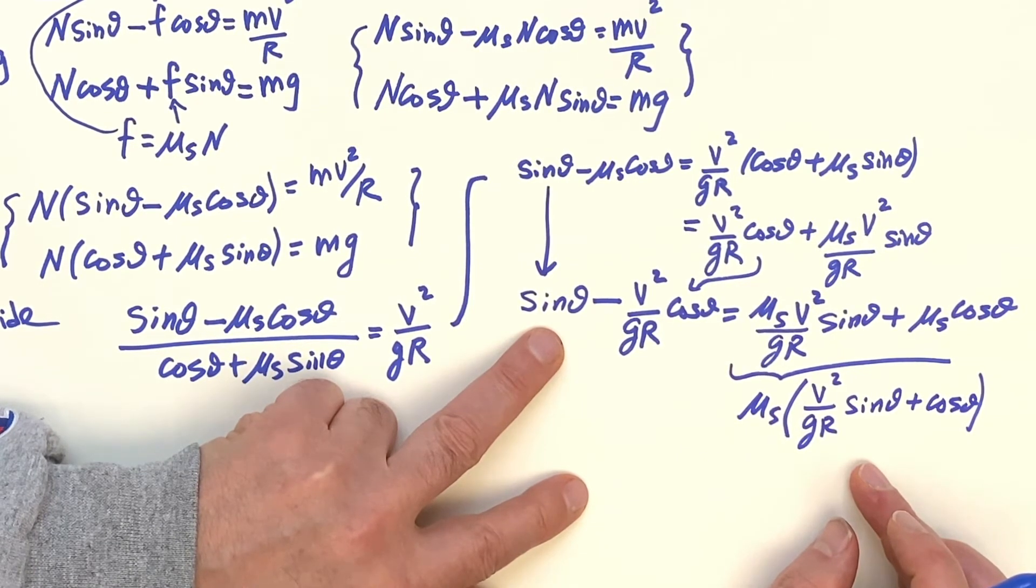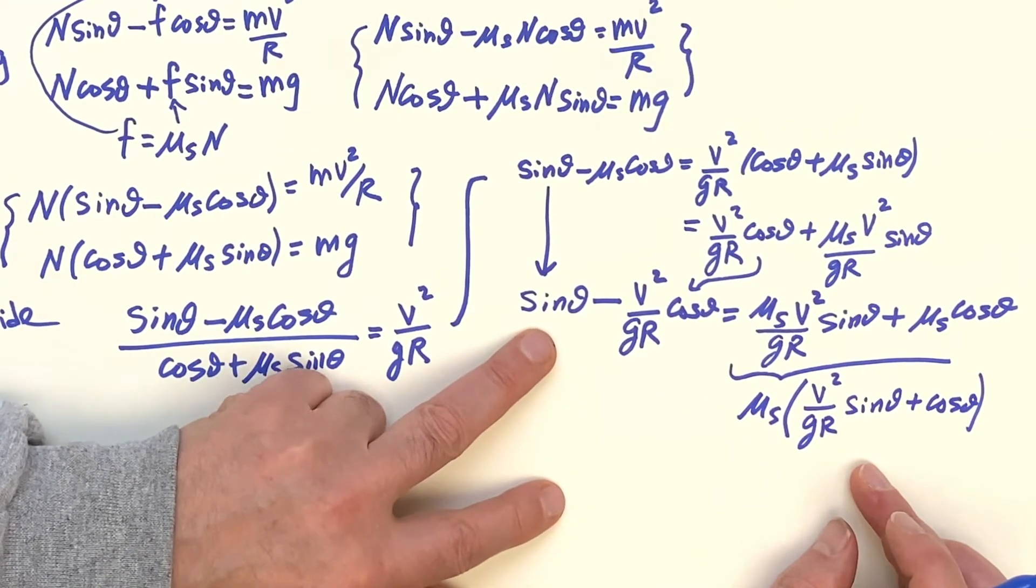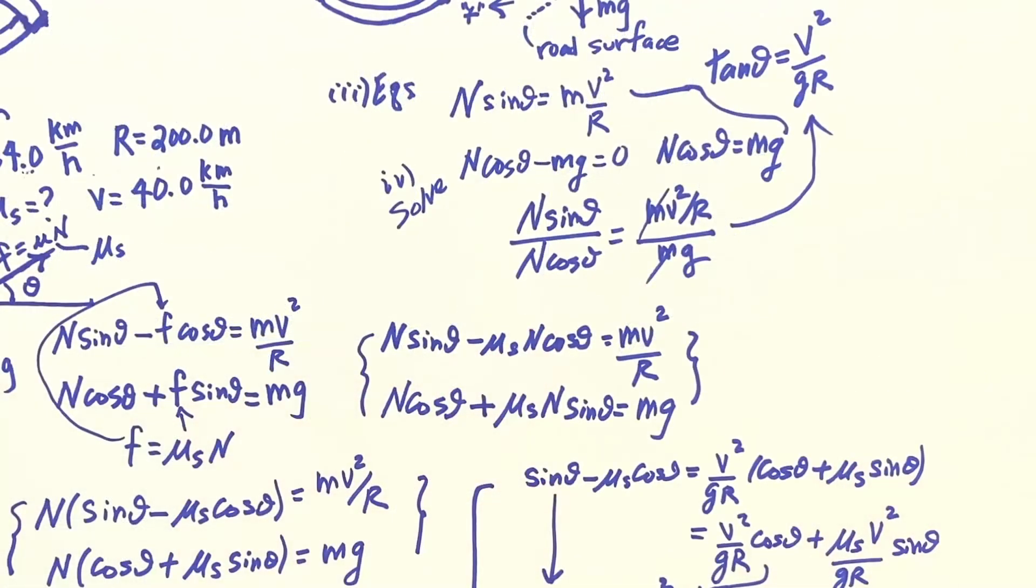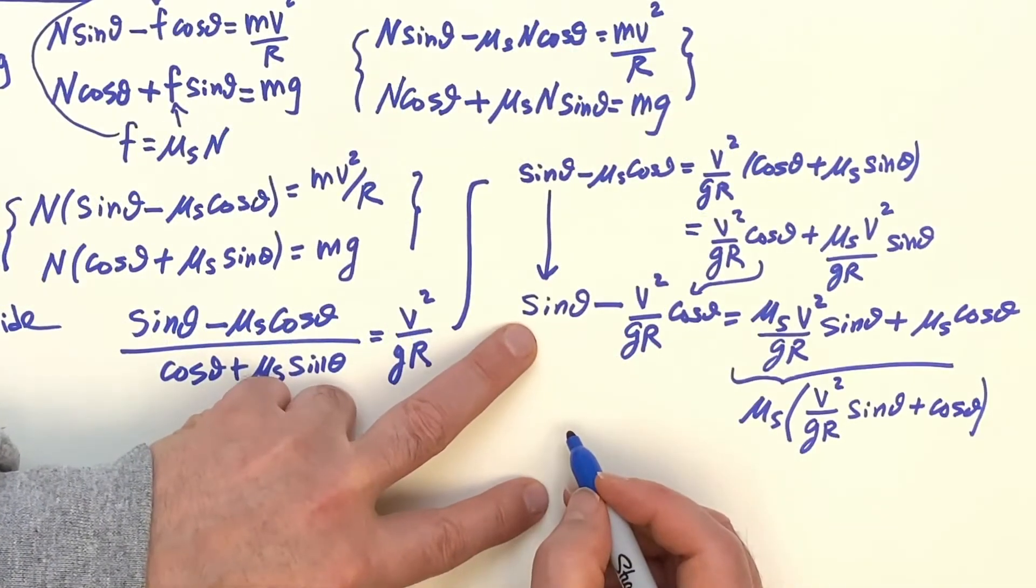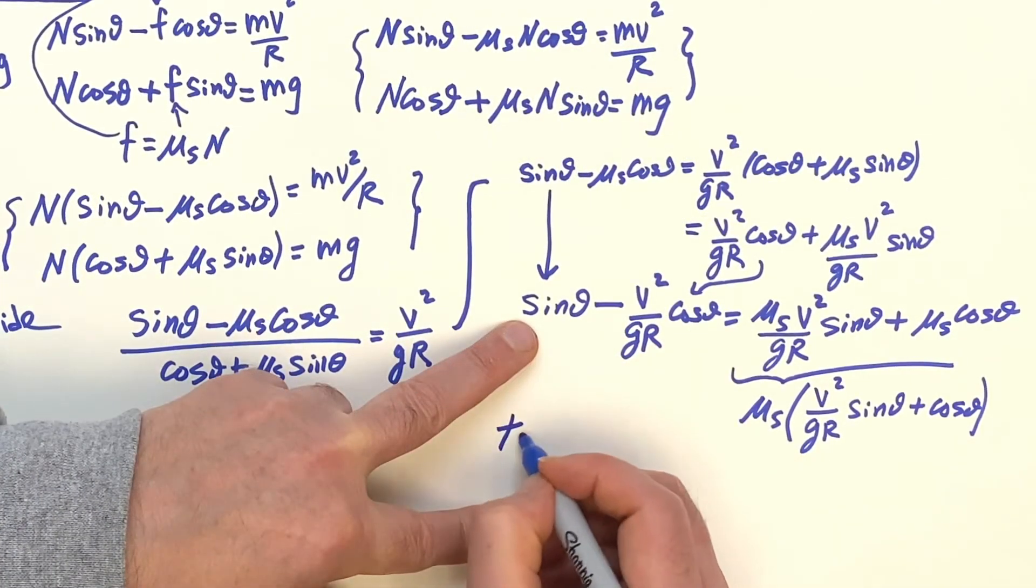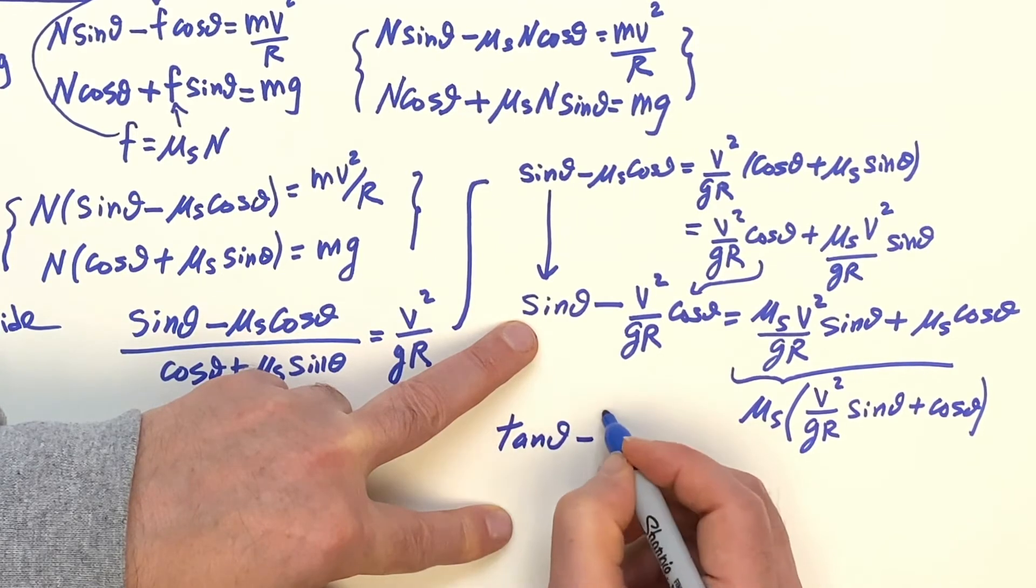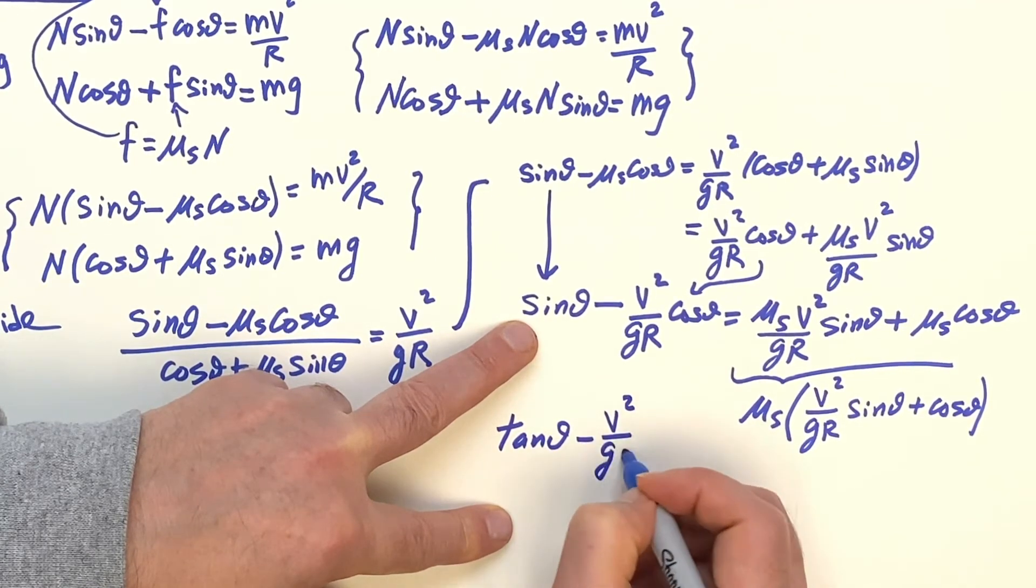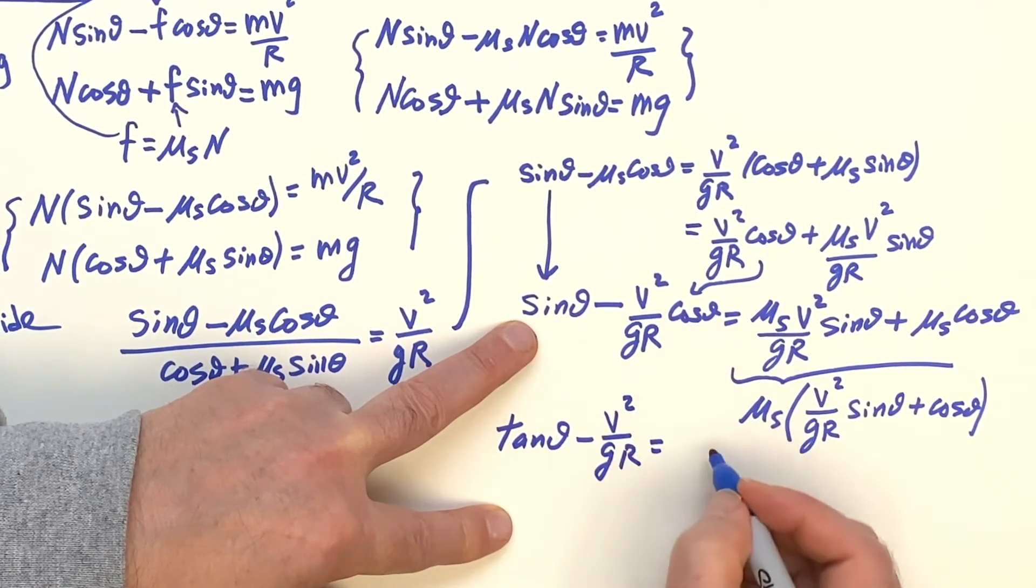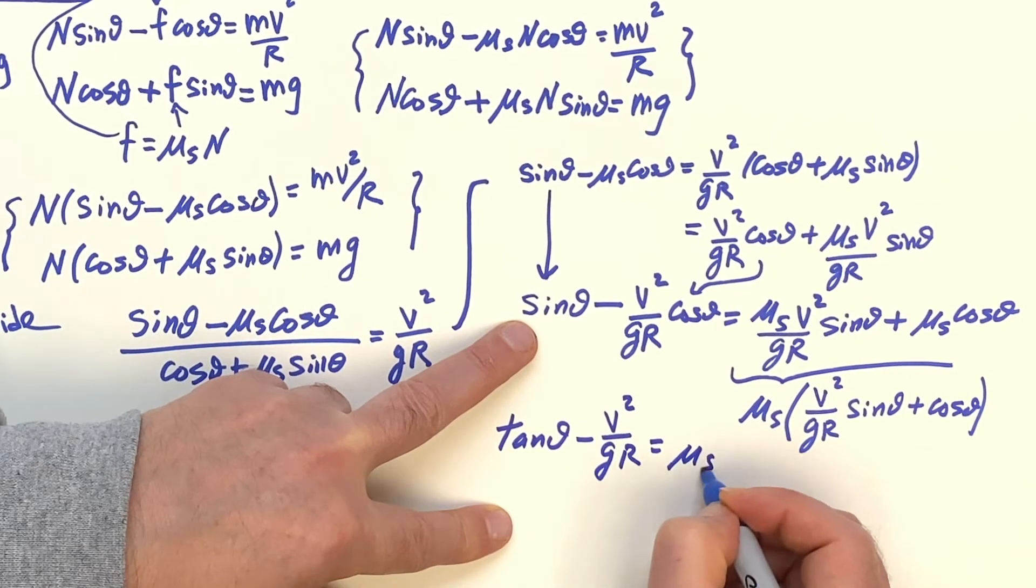Tangent's been nice in the past. Look, say that tangent theta up there. So here, if I do that, I'll have the tangent of theta minus V squared over G, R.